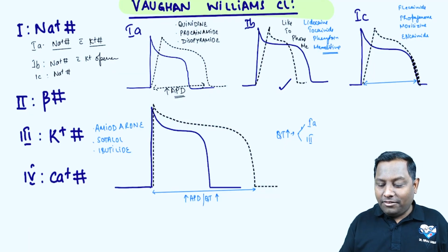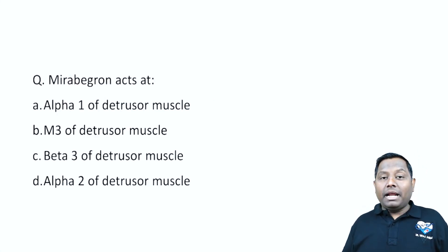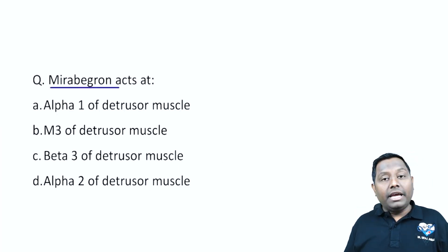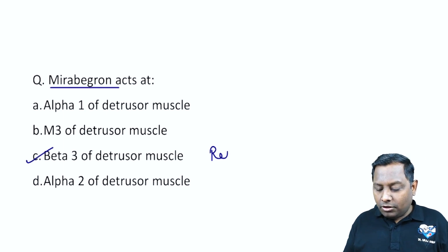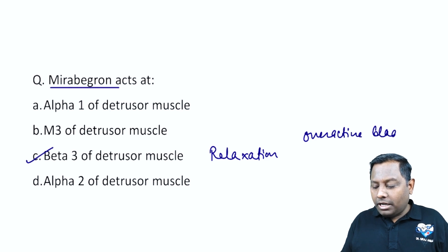Moving on to the next topic: Mirabegron is a beta-3 agonist acting at the detrusor muscle, causing relaxation of the detrusor muscle. It is used in patients with overactive bladder, a condition involving detrusor muscle instability.